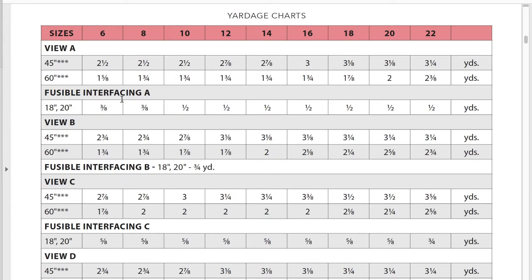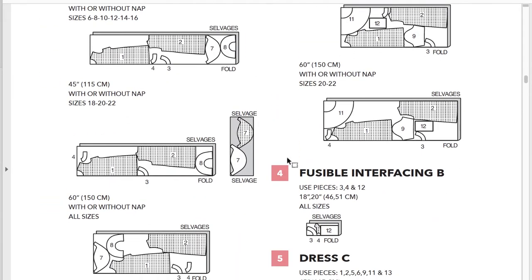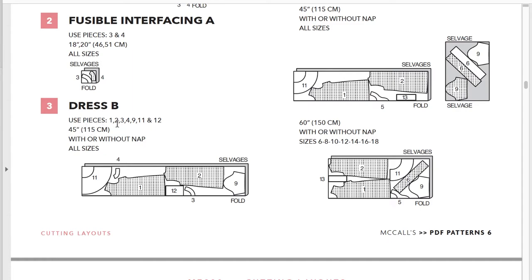I also didn't talk about fusible interfacing. A lot of times when you're sewing, especially with this type of pattern, it's going to have you put some interfacing into a garment to give certain pieces a little bit of stiffness. In my case, I would need about 1⅞ yards. Now looking at the layout for fusible interfacing for view B — the cutting layout will tell you exactly what pieces you need, and they'll all be numbered. It's also going to indicate whether pieces need to be wrong sides together or right sides together, which is very important because it impacts how the fabric fits together.